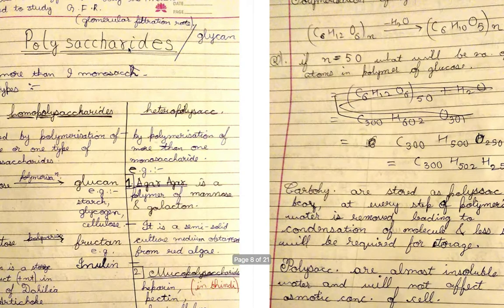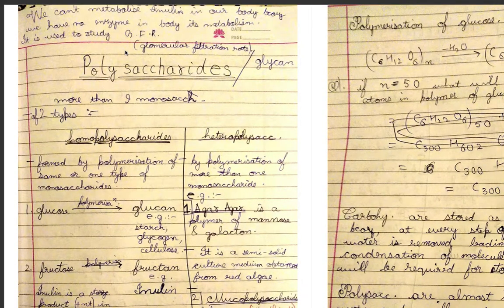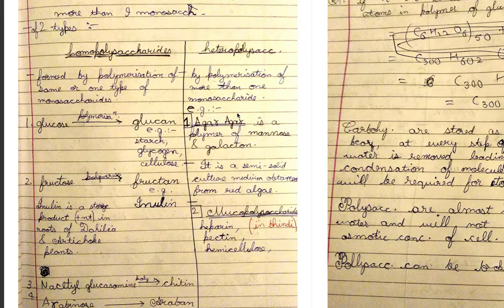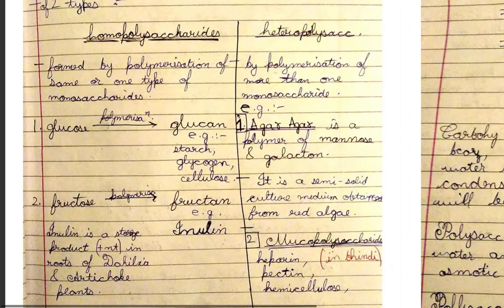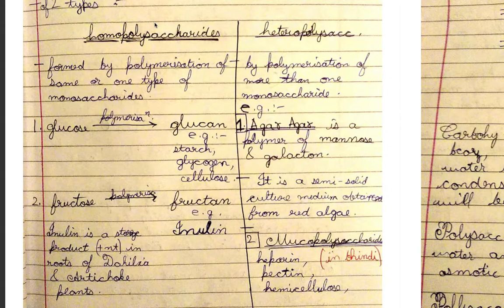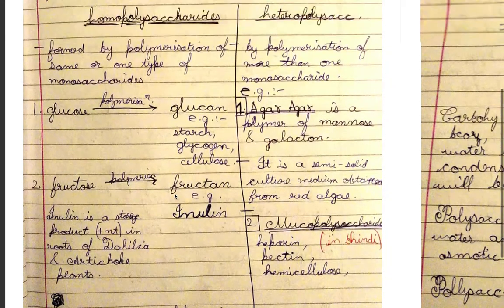Polysaccharides are formed by more than nine monosaccharides combined together. They are of two types: homopolysaccharides, formed by polymerization of the same single type of monosaccharide, and heteropolysaccharides, formed by polymerization of more than one type of monosaccharide. More questions are asked from homopolysaccharides.